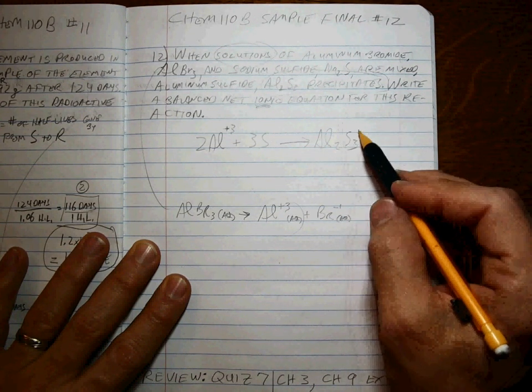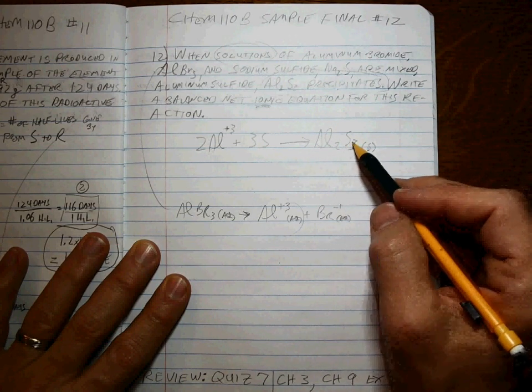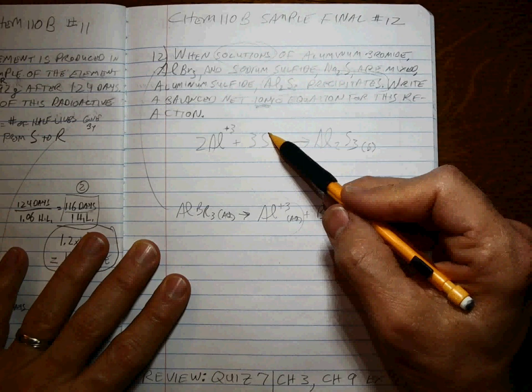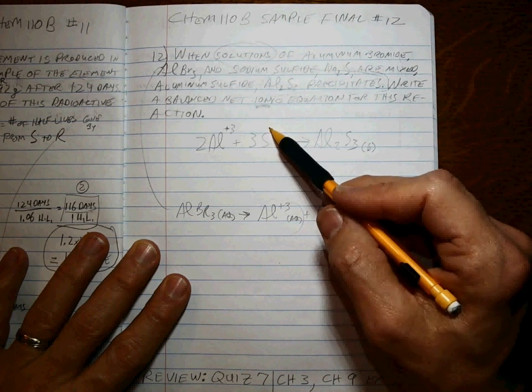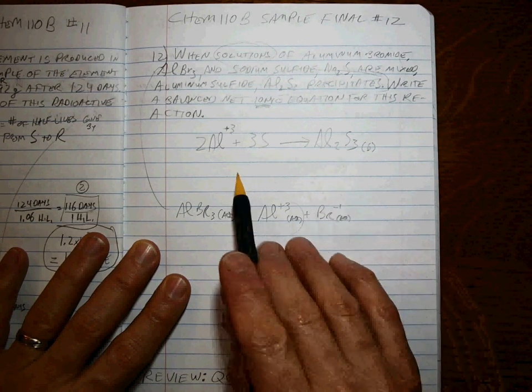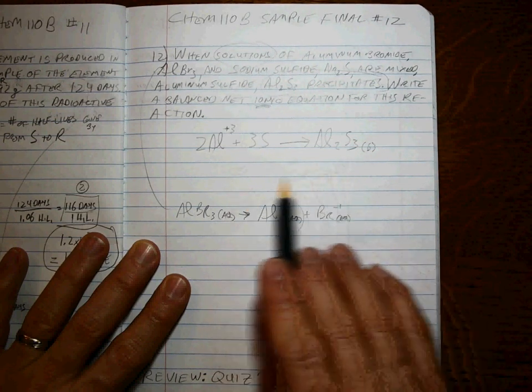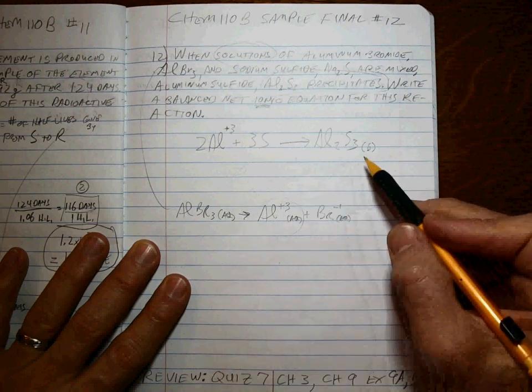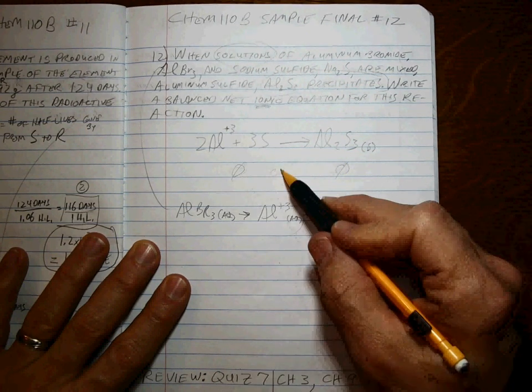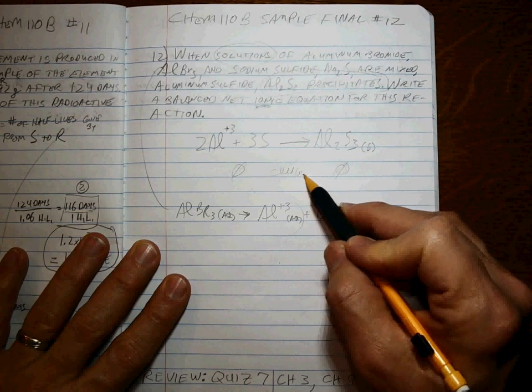These ions are still there in this solid precipitate, but we don't write charges on compounds, only on individual ions. Now, even if you didn't know what this sulfur was, you know what that charge has to be, because the total charge on this side and the total charge on this side—in this case it's zero and zero—it has to balance out.